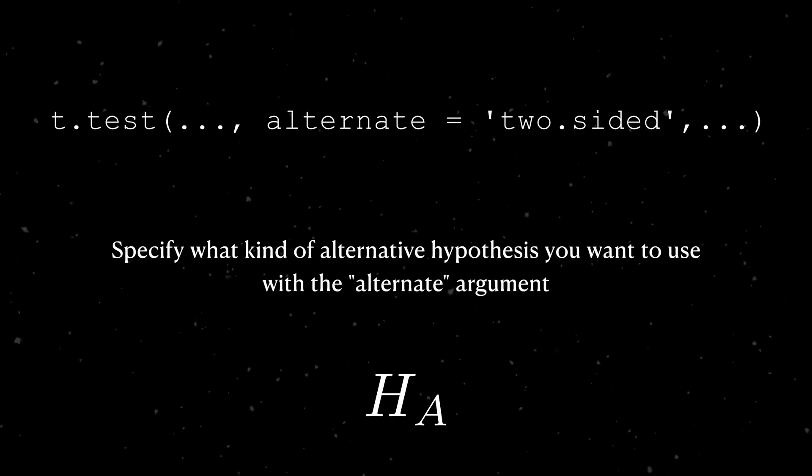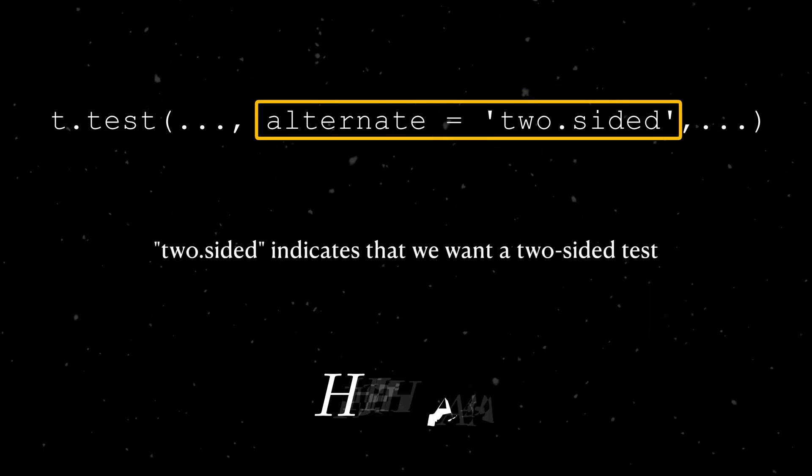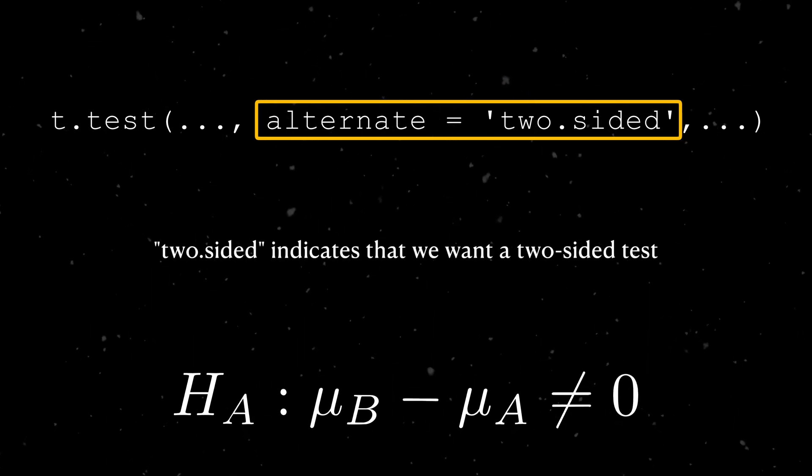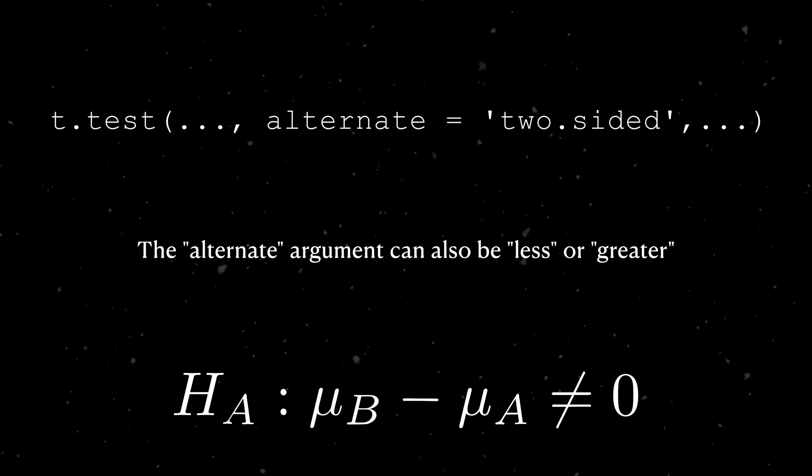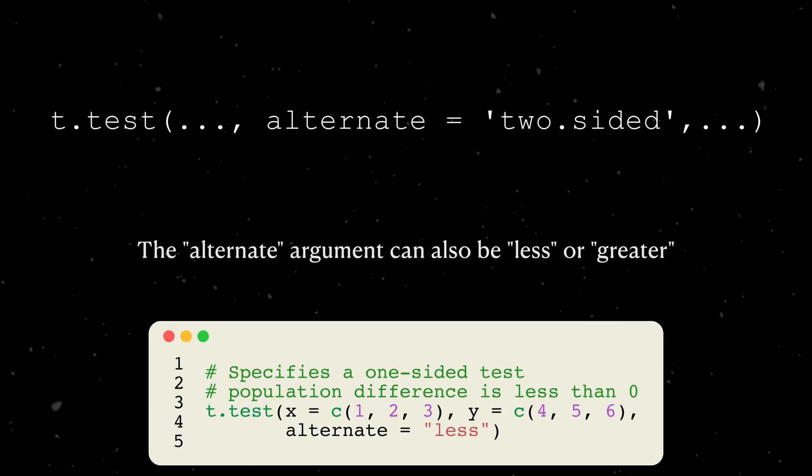Next, we can specify what kind of alternative hypothesis that we'd like to use for the test using the ALTEN argument. This comes from Neyman and Pearson's incorporation of the alternative hypothesis into the NHST. This argument takes a string, and the default value is two-sided, which indicates that we want to use a two-sided test. The other two options are less and greater, which indicate that we want a one-sided test.